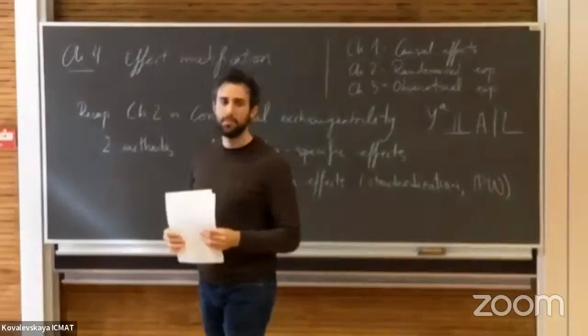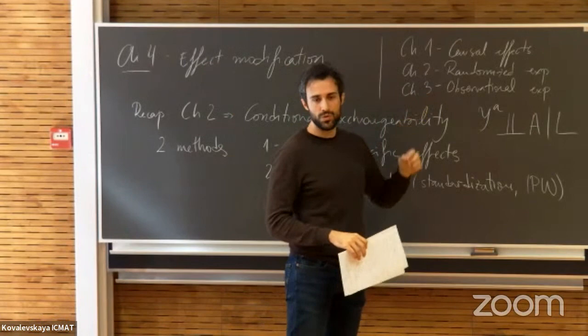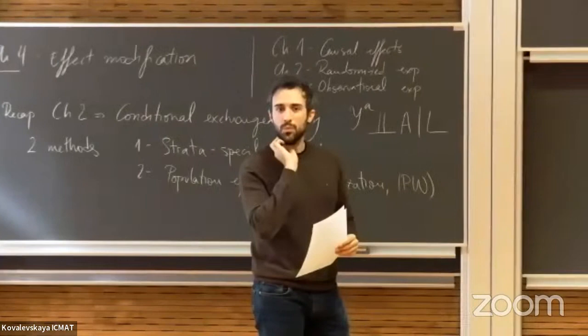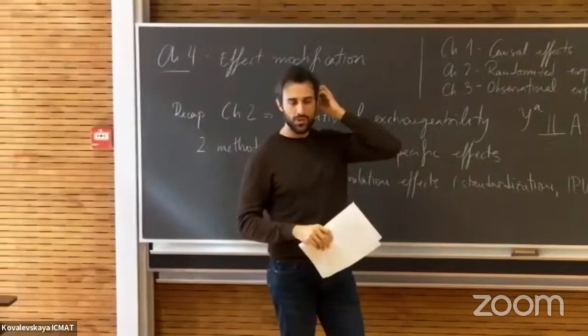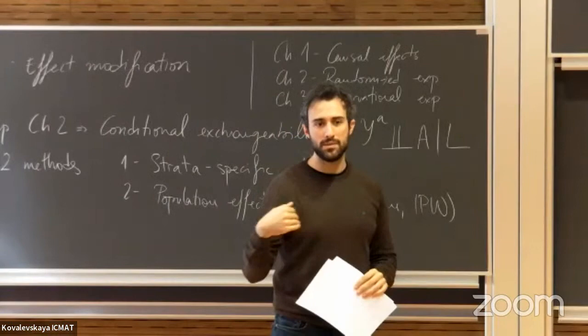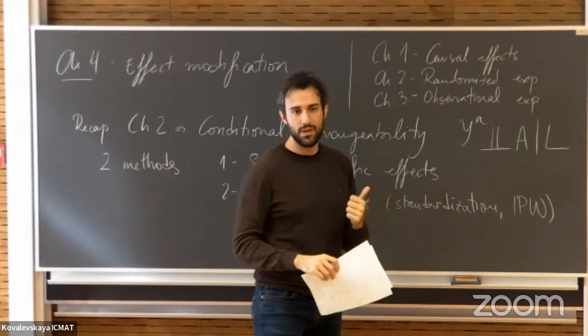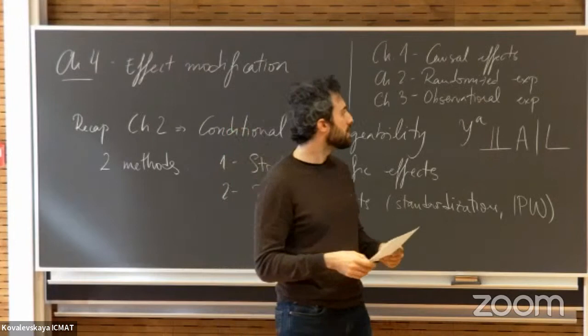So we're all on the same page to begin with. In the first chapter — I'm not going to go into details, you have the videos on YouTube, and we're going to upload chapter three soon — chapter one was about giving a precise definition of a causal effect. We also gave some measures. We talk about causal effects when the potential outcomes differ, such as causal risk difference or causal risk ratio, which are two different ways of characterizing causal effects.